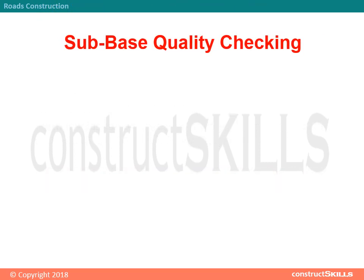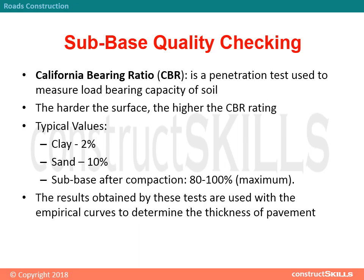California Bearing Ratio (CBR): It is a penetration test used to measure the load-bearing capacity of soil. The harder the surface, the higher the CBR rating. Typical values are: Clay 2%, Sand 10%, Sub-base after compaction 80 to 100% maximum. The results obtained by these tests are used with empirical curves to determine the thickness of pavement.